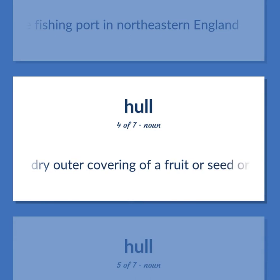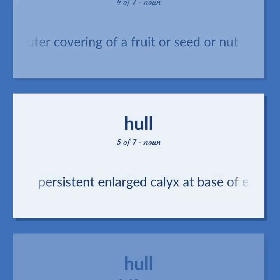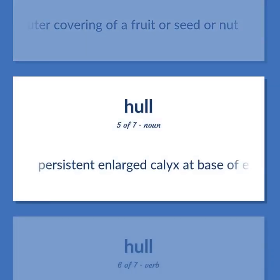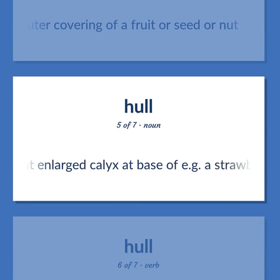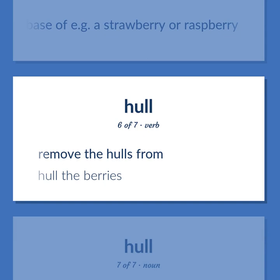Hull: Dry outer covering of a fruit, seed, or nut. Also, the persistent enlarged calyx at the base of e.g. a strawberry or raspberry. To hull means to remove the hulls from — for example, hull the berries.